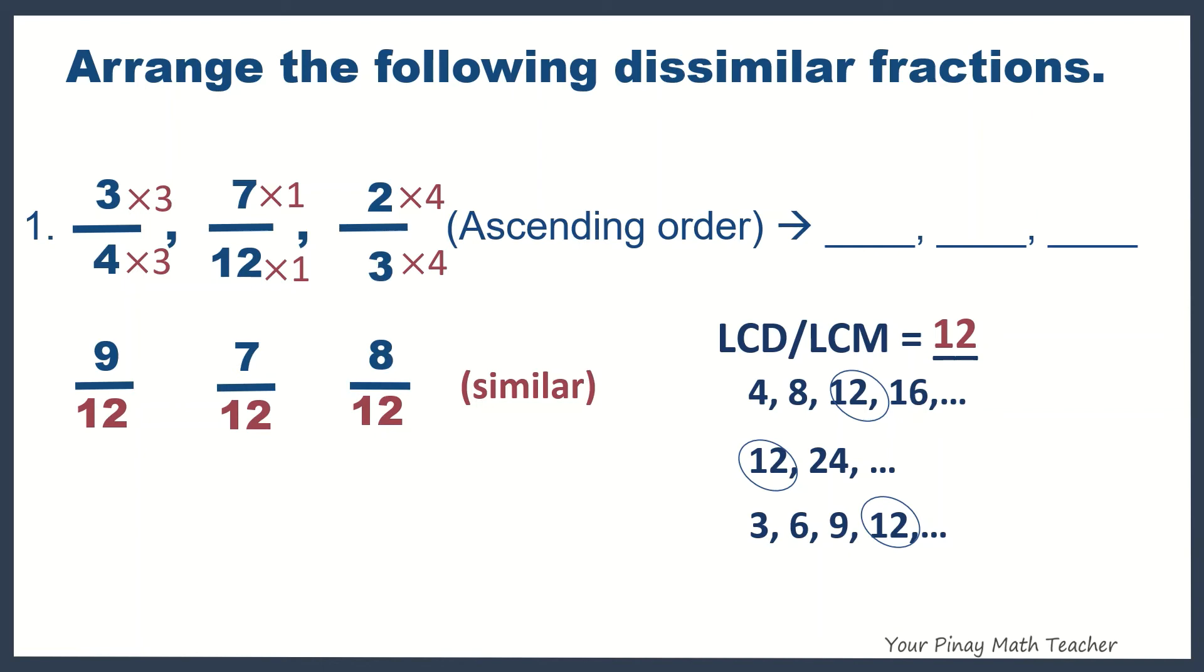So, by comparing the similar fractions, we can now say that the smallest fraction among the 3 is 7 twelfths, followed by 2 thirds, and then 3 fourths. Please be reminded to arrange the given original fractions.